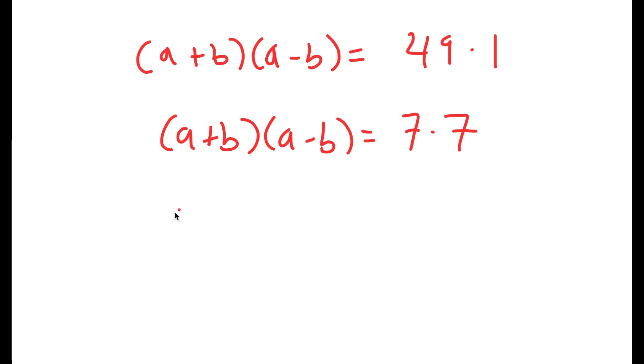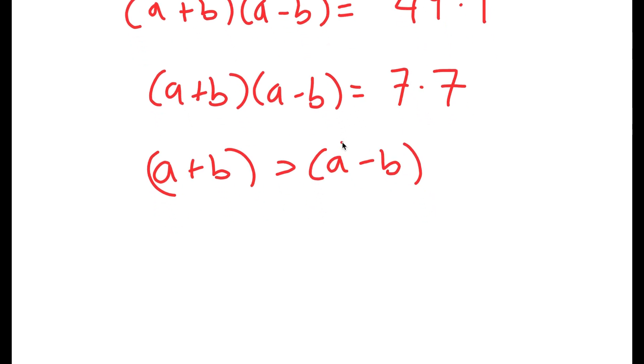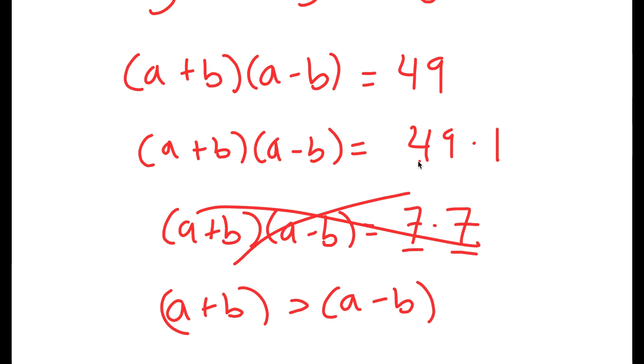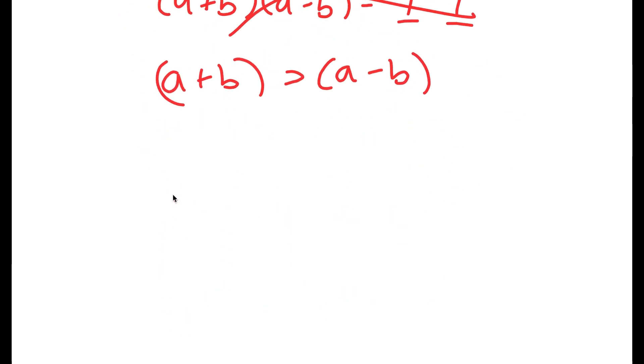Now we obviously know that a plus b is going to be greater than a minus b. So this means that we can't use 7 times 7, as 7 and 7 are equal. So this possibility is out of the way, and 49 times 1 is the only possibility here.